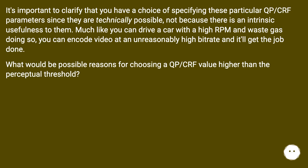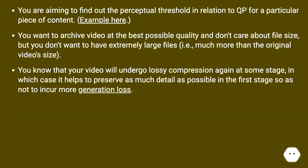What would be possible reasons for choosing a QP/CRF value lower than the perceptual threshold? You may be aiming to find the perceptual threshold for a particular piece of content. Or you want to archive video at the best possible quality and don't care about file size, but don't want extremely large files much more than the original video's size. You may also know that your video will undergo lossy compression again at some stage, in which case it helps to preserve as much detail as possible in the first stage so as not to incur more generation loss.